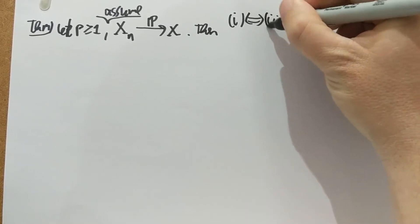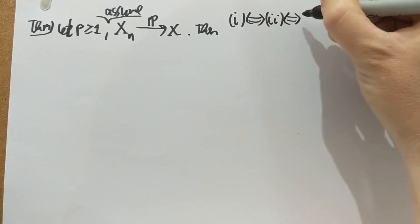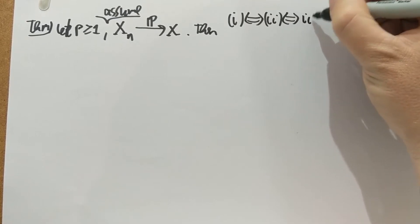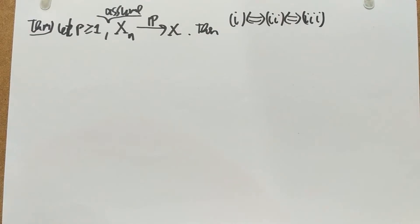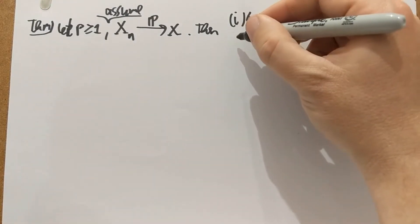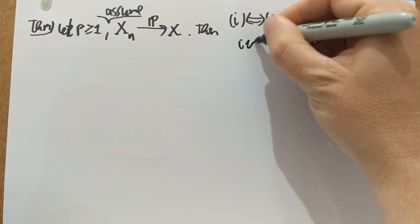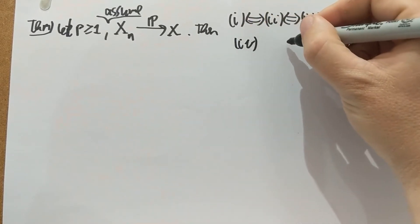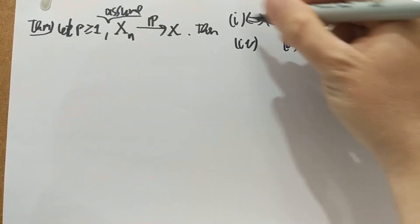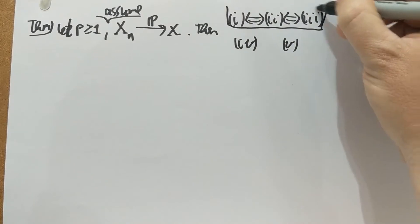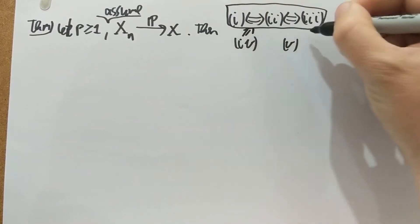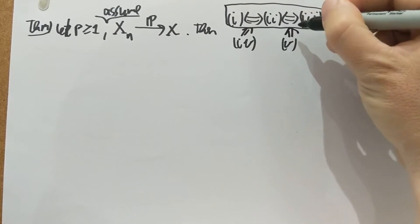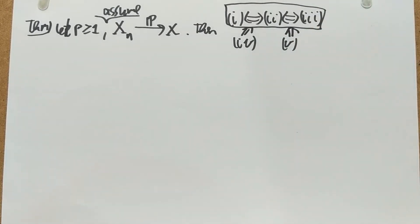And so the theorem is that five, one, two and three of those five statements are equivalent, so they happen or don't happen at the same time. And then there's going to be further two, four and five. So these are all equivalent. Four and five will each separately imply one or two or three, which are all equivalent.